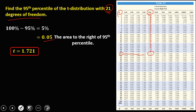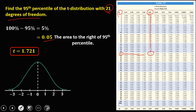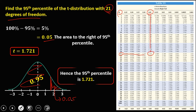The t-value is 1.721. Plotting this on a curve: the area to the left is 0.95, and the area to the right is 0.05. Therefore, the 95th percentile is 1.721.